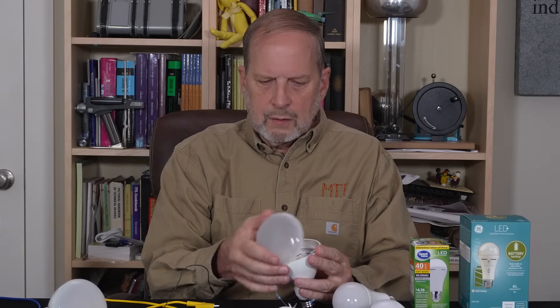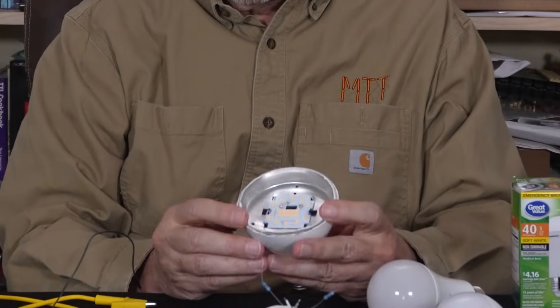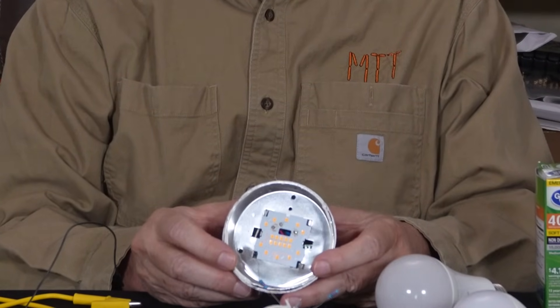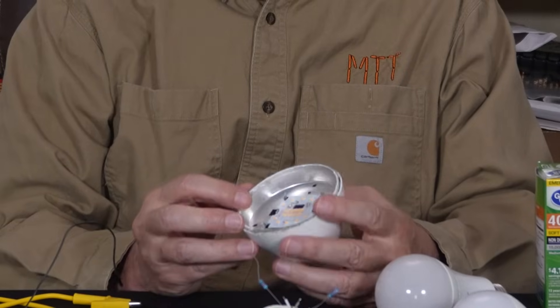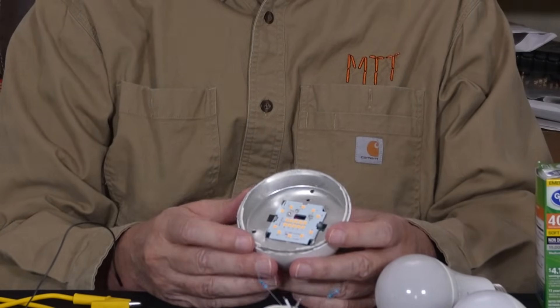But what's actually inside of these? How do they work? Well, let's take it apart. There's nothing like taking it apart to understand how it works. So we look inside. We have a diffuser on the top. And then you see in this model has a little aluminum metal tray. And what's on top of that is the array of LEDs.